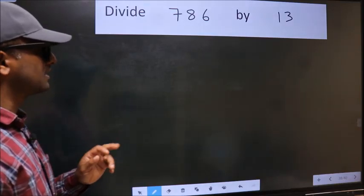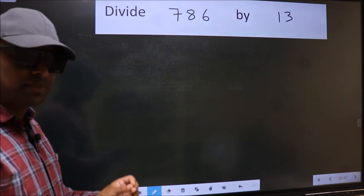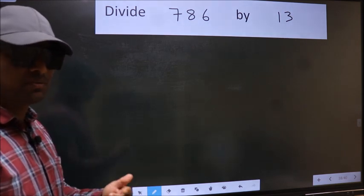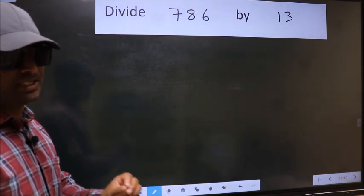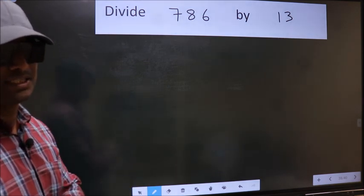Divide 786 by 13. While doing this division, many do this mistake. What is the mistake that they do? I will let you know. But before that, we should frame it in this way.